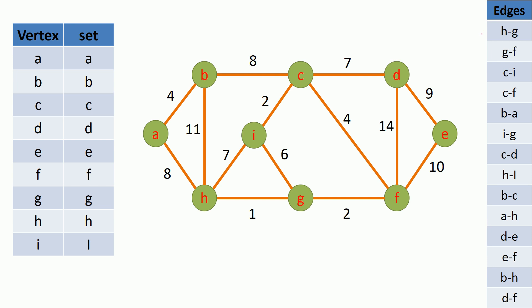The first edge I am going to select is the edge between H and G vertices. H vertex is currently belong to set H and G vertex is currently belong to set G. So we can add this edge to our MST set. Then we have to union the sets that each of these vertices belong to, so I am going to change G vertex set to H.